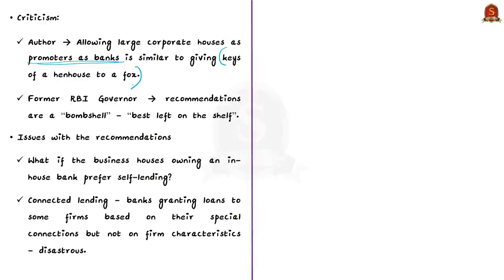Because of this, even former RBI Governor Raghuram Rajan termed these recommendations as unpleasant and asked to leave them on the shelf — that is, not to utilize these recommendations. The issue here is simple: what if business houses owning an in-house bank prefer self-lending? This will lead to connected lending, where banks grant loans to firms based on special connections rather than firm characteristics.